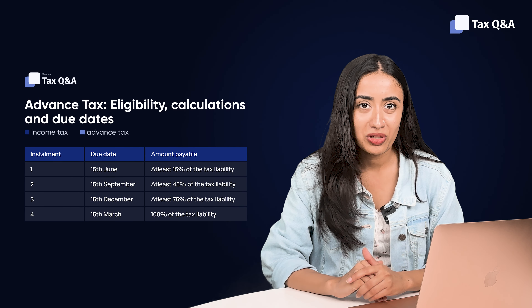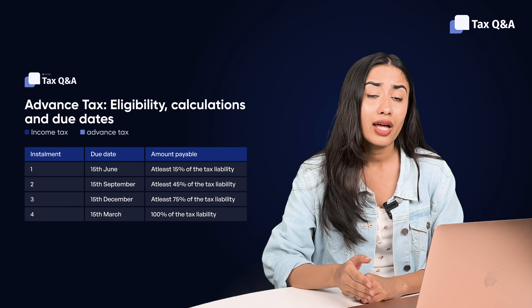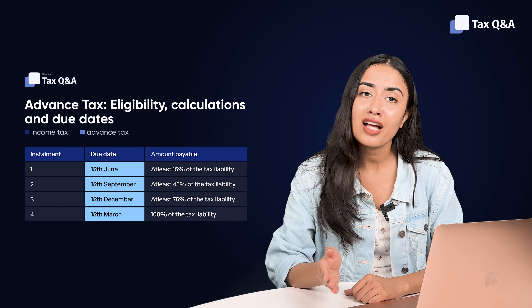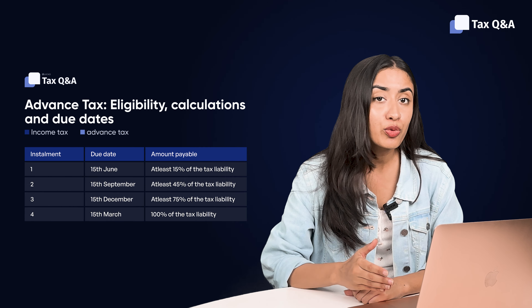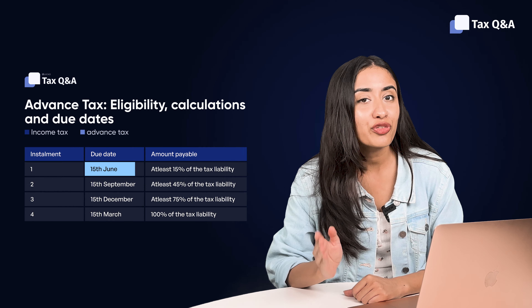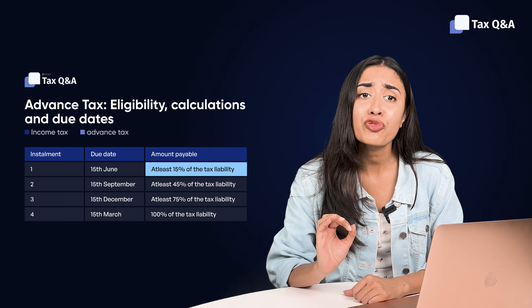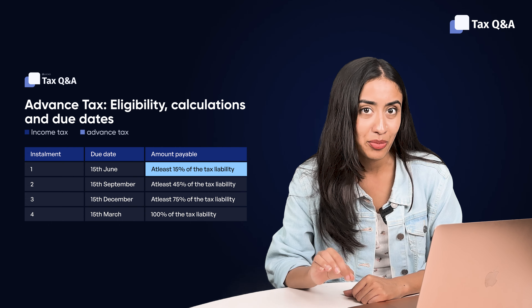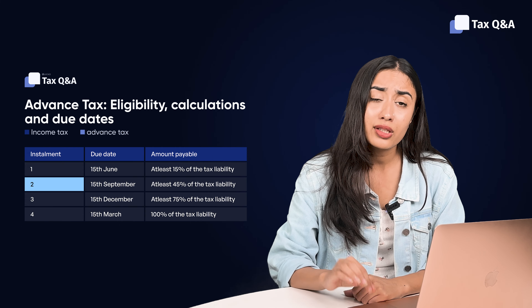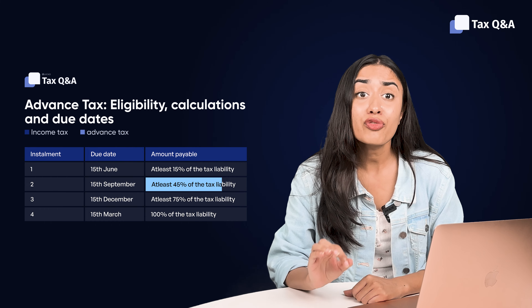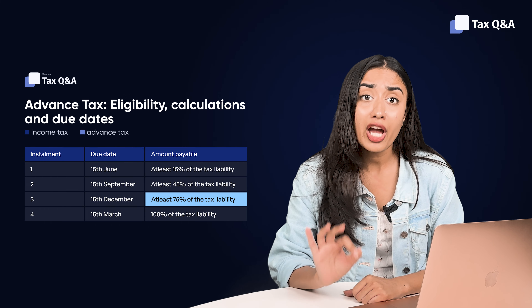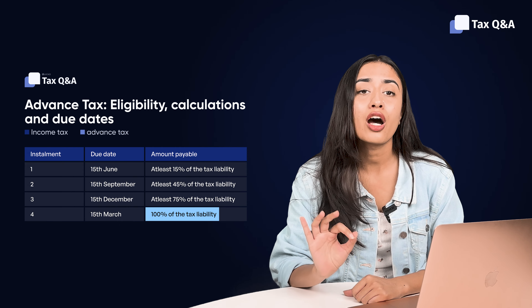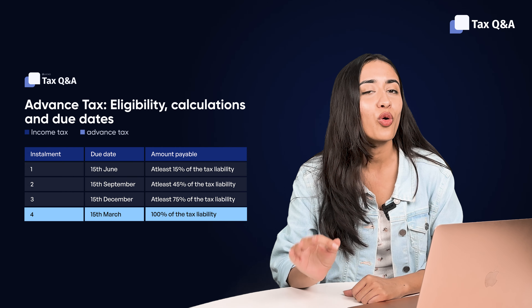You have to make the tax payment over four installments, one for each quarter. The due date is the 15th of the last month of that quarter. For Quarter 1 (April to June) the due date is 15th June, where you pay at least 15% of the total tax liability. For Quarter 2 it is 15th September, with 45% paid up to that point. Quarter 3 requires 75%, and Quarter 4 requires 100% of your tax liability.